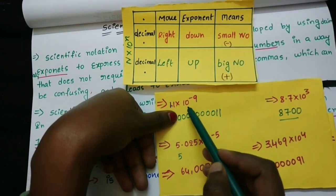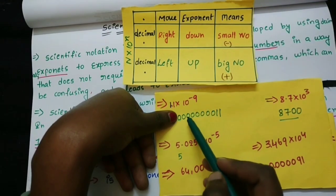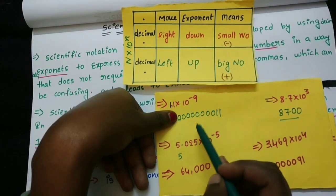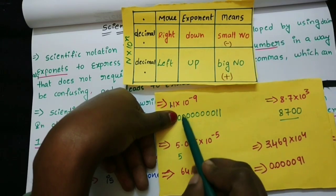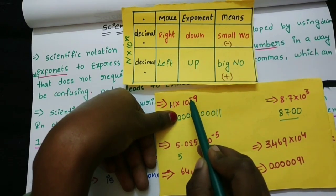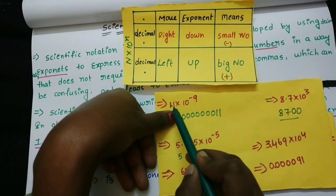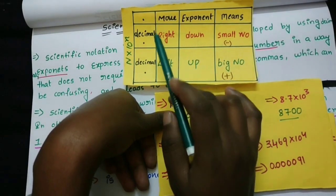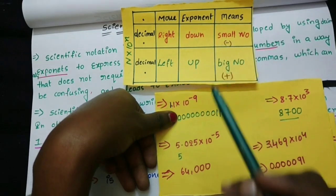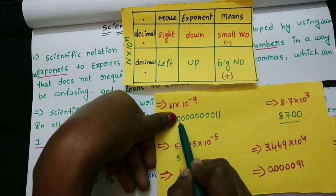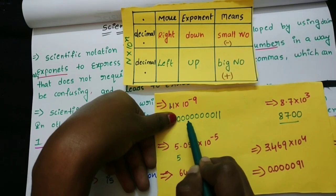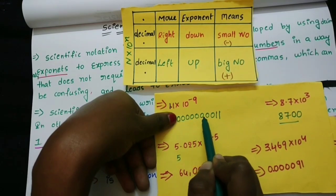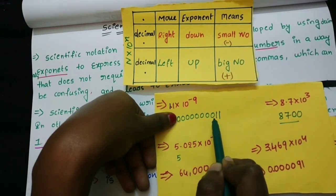Another example: 1.1 into 10 to the power of minus 9. This is a small number. A negative exponent means the decimal moves to the right, creating a small number. Writing it out: 1, 2, 3, 4, 5, 6, 7, 8, 9 places, then write the decimal.